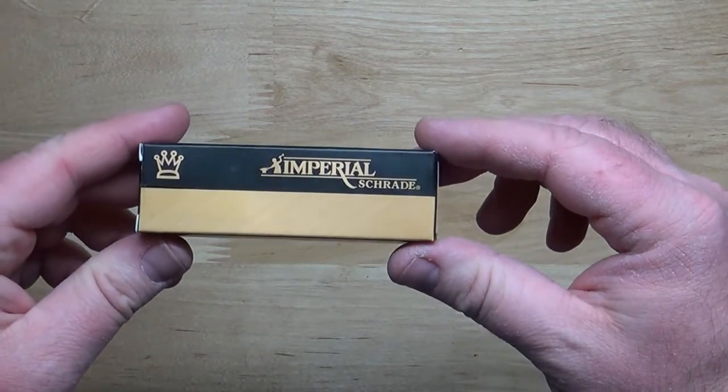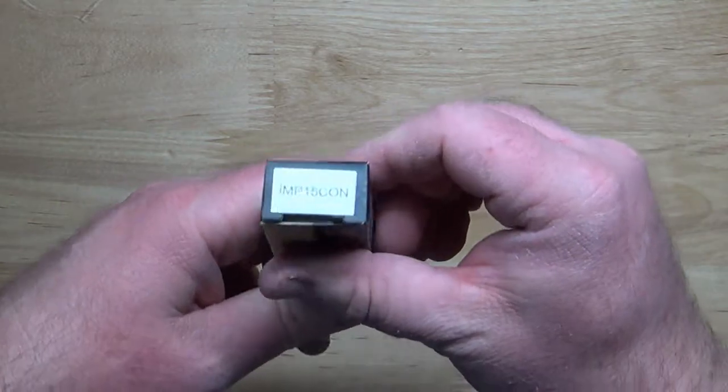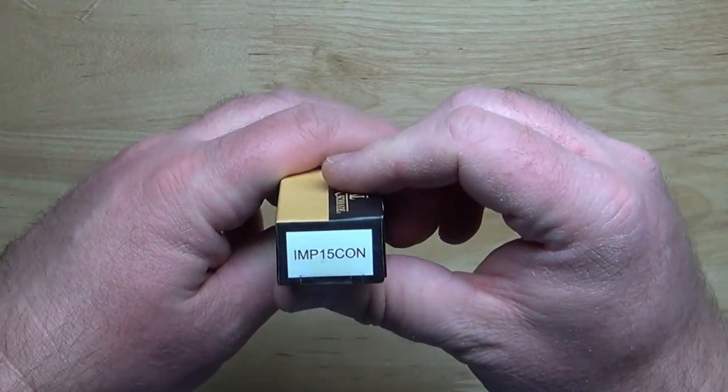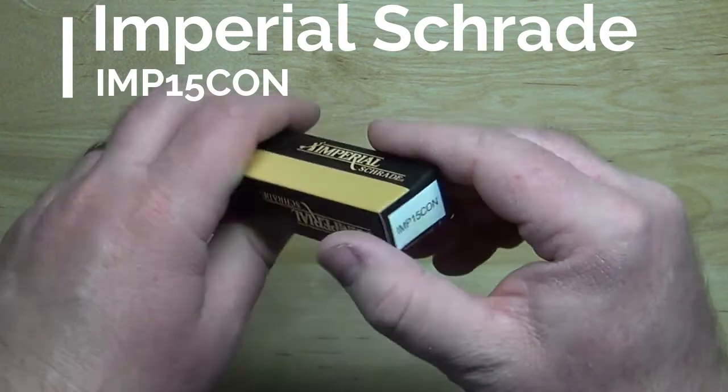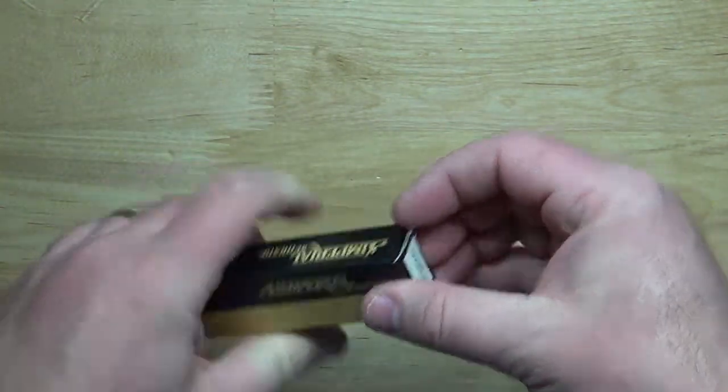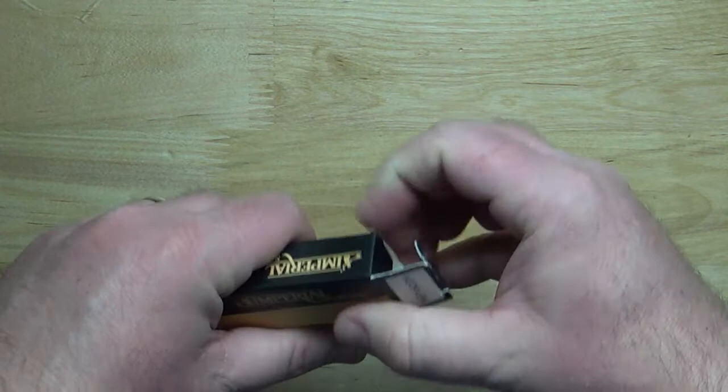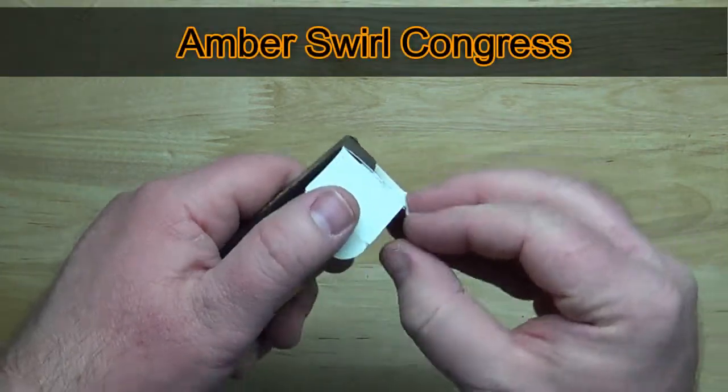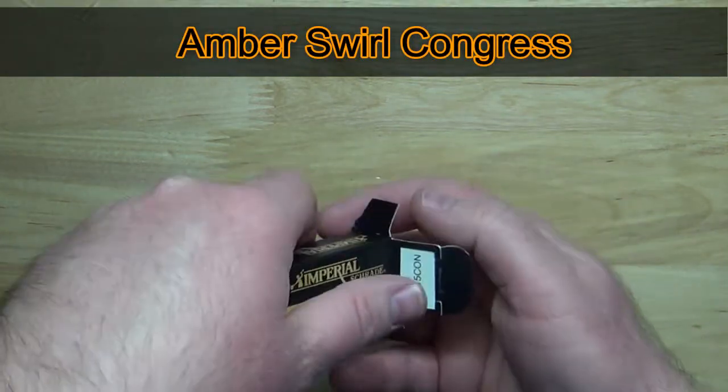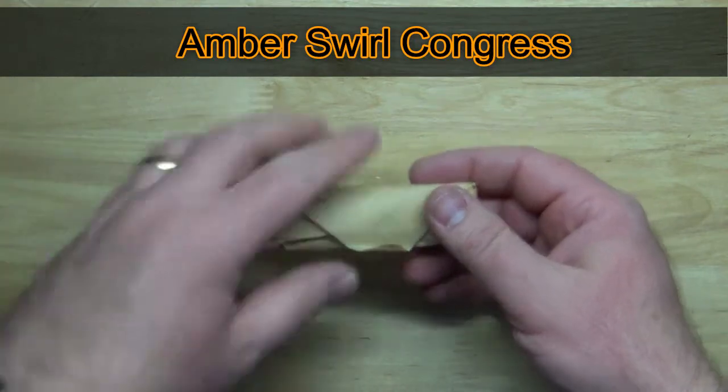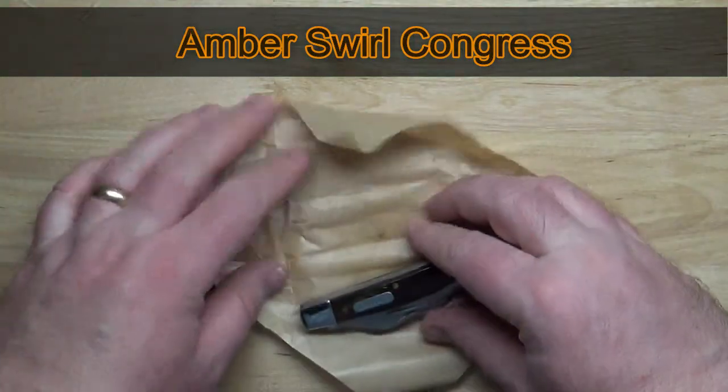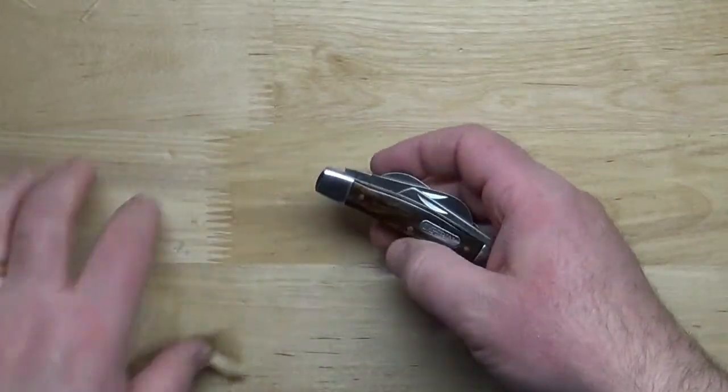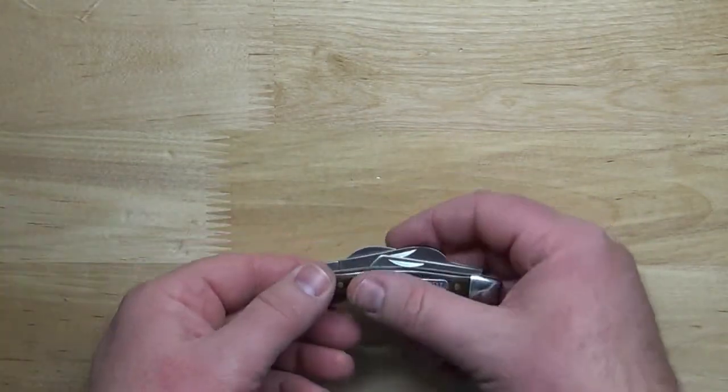Alright, Imperial Schrade, this is the IMP 15 CON which stands for amber swirl Congress pocket knife. So this one I'm kind of excited to see. Oh yes, this one I like the coloring on.